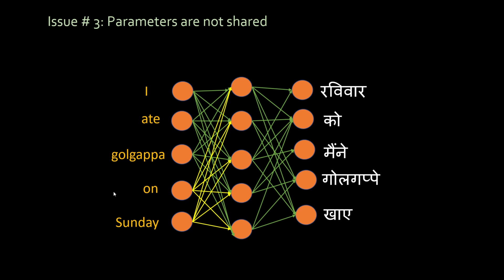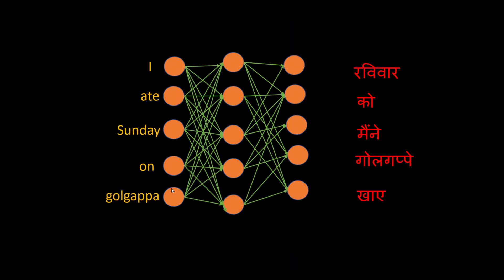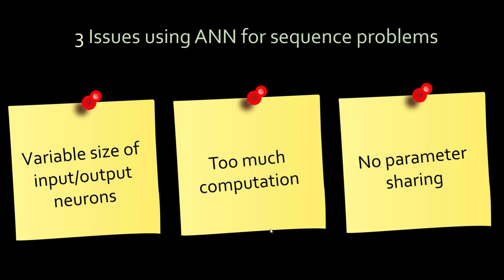The use of ANN doesn't allow parameter sharing the way convolutional neural networks do. Also, the most important part is sequence. With structured data — for example, predicting fraud using features like transaction amount, whether the transaction was made out of country, or whether the SSN is correct — if you change the order of these features it doesn't affect anything. But with English-to-Hindi translation, saying 'I ate Sunday on gol kappa' instead of the correct order makes the meaning totally different. That's why ANN doesn't work for sequence problems.